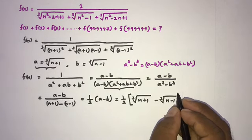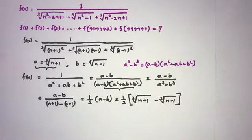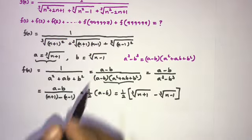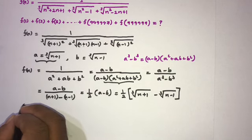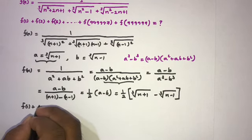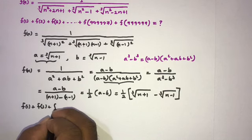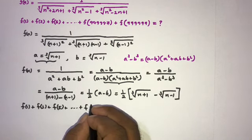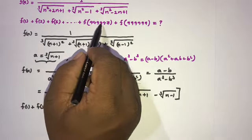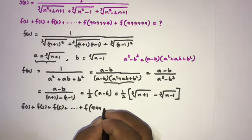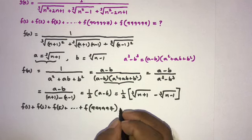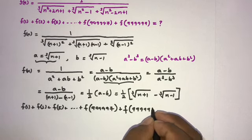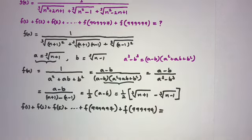Now we can find the value of the expression f(1) + f(3) + f(5) + ... + f(995) + f(997). We plug in the simplified formula for each odd value of n.